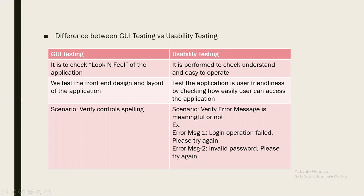Usability testing tests whether the application is user friendly — checking how easily the user can access the application. For a specific scenario in GUI testing, we might verify control spelling, whereas in usability testing we would check whether error messages are meaningful or not.